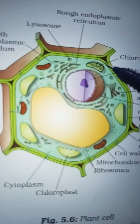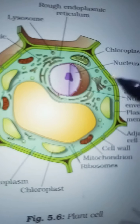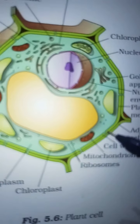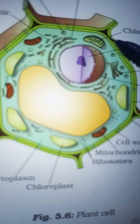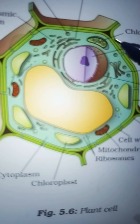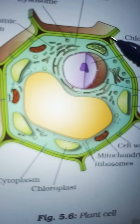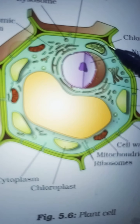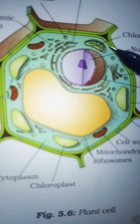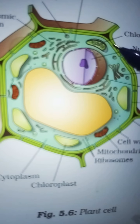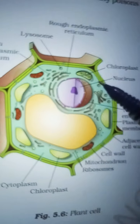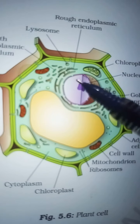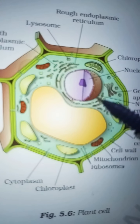Here you can see the cell wall — this is the cell wall of the plant cell. And this one is the plasma membrane. In the plant cell there are two membranes: the plasma membrane and the cell wall. But in animal cells there is no cell wall, only the plasma membrane. Now we will study the nucleus.